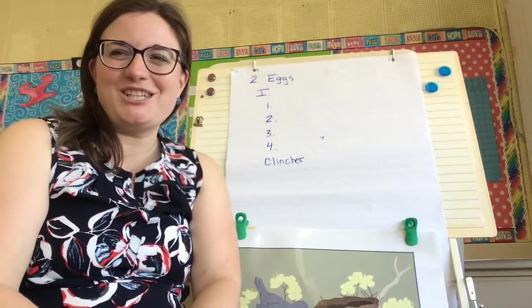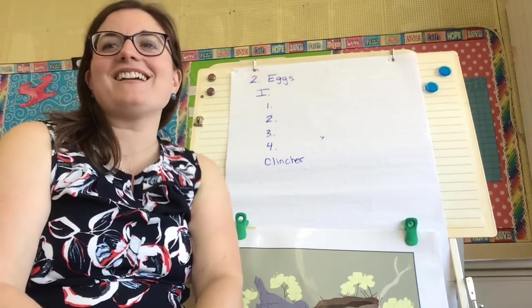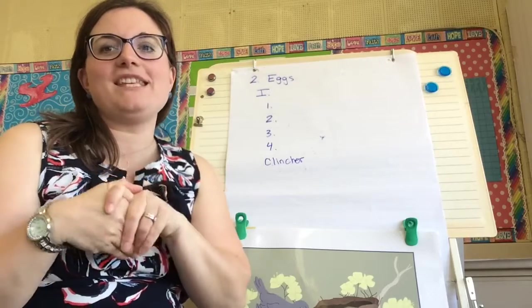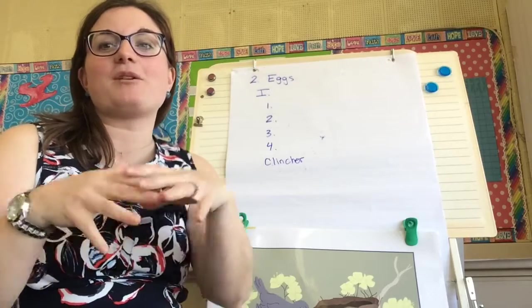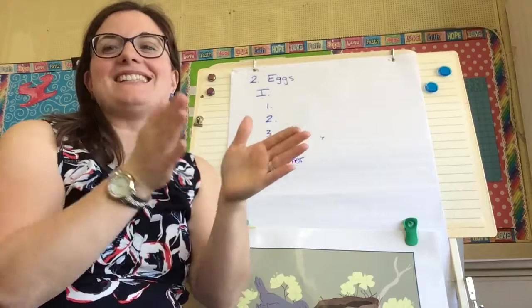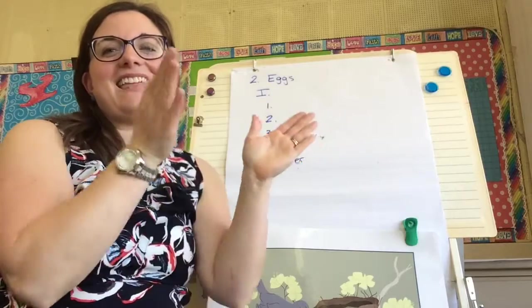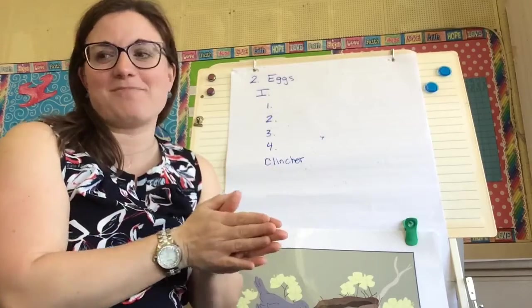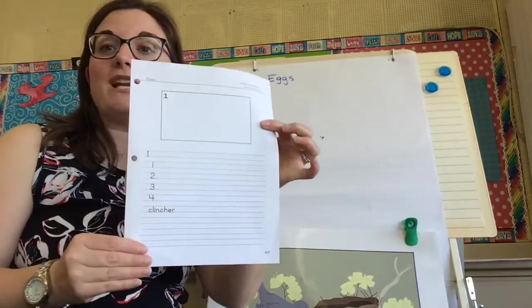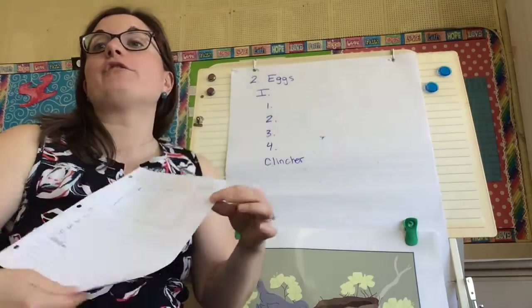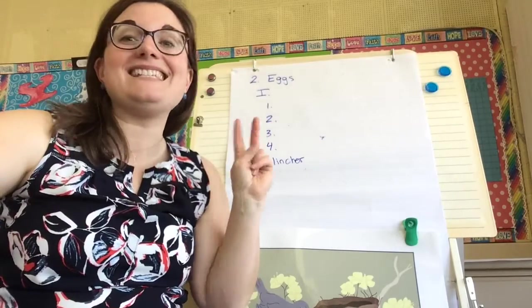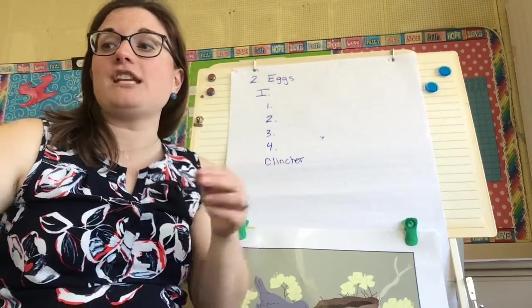Hello, welcome back to our second writing lesson this week. We started with our pictures of a bird building a nest, laying eggs, and the eggs hatching. On Monday you were to complete your keyword outline for the first picture of the building of the nest. Today we're going to do the second.